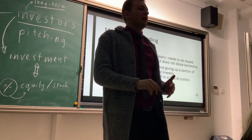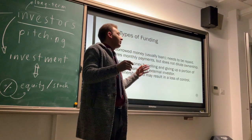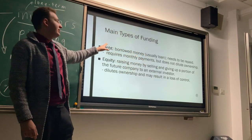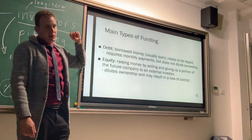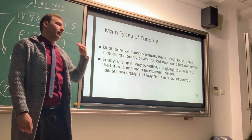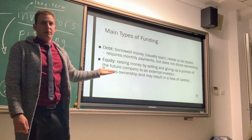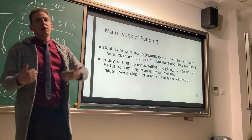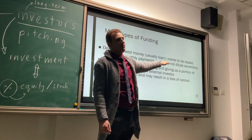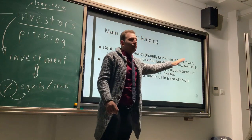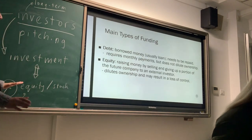Number one is debt. You get money that you're going to repay back — it might be from a bank, a wealthy person you know, or your family. It's debt: somebody gives you money, you pay it back. This means they do not own equity in your business, it does not dilute your ownership, and they do not get a percentage of the business.